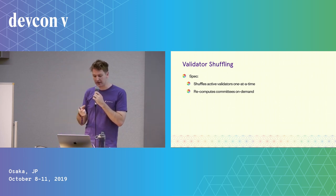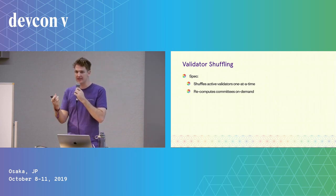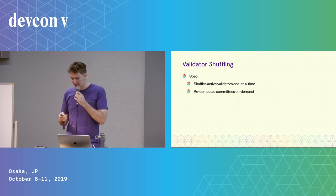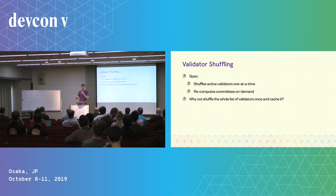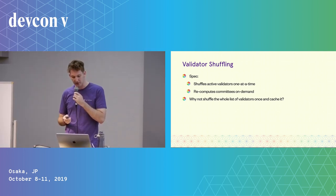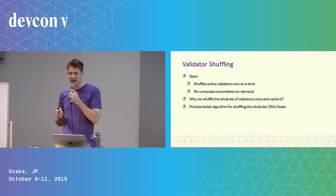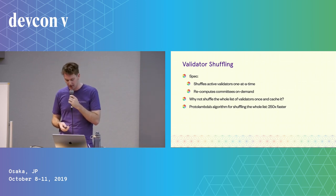The spec also extracts committees on demand. So if you get an attestation from the network and you need to know who are the validators in this committee, it'll compute the shuffling, extract the committee on demand, then throw it away and recompute it when you get another attestation for the same committee — which is not so efficient. So why not just shuffle all the validators once at the beginning of the epoch, cache that shuffling, and then read the committees off on demand as you need to? That's exactly what we do. We use an algorithm that Proto Lambda came up with, and it ends up being 250 times faster than shuffling the list one at a time — a 250 times speedup — plus the benefit of not redoing the computation each time you get an attestation.